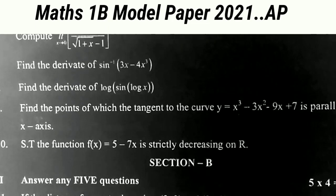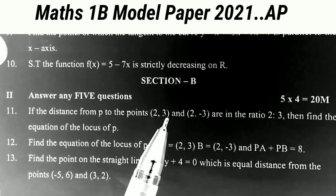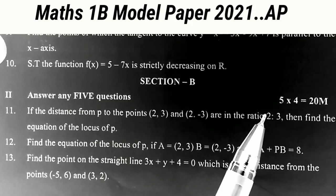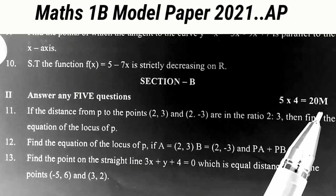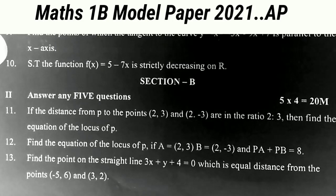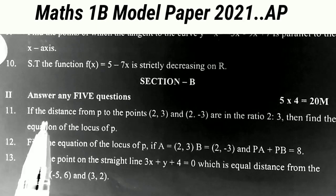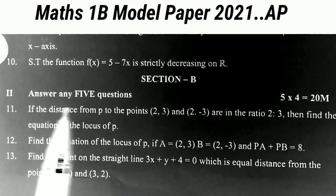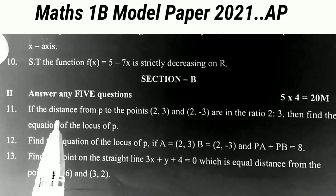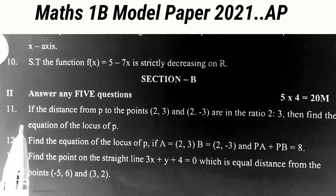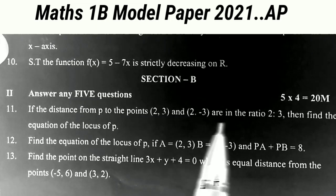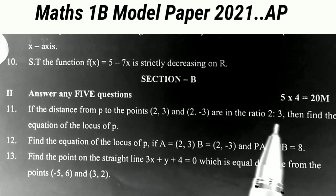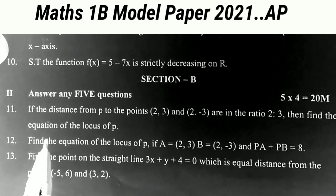Now coming to Section B. In Section B we have seven problems; we have to attempt only five sums, and each one carries four marks — that is 5 × 4 = 20 marks. There are two choices here. So answer any five of the following. The 11th question: if the distances from P to the points (2, 3) and (2, -3) are in the ratio 2:3, then find the equation of the locus of P.